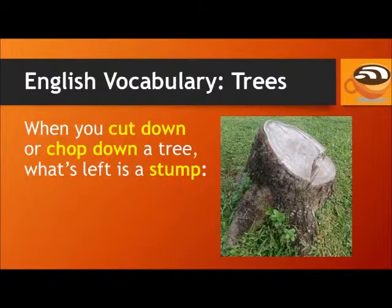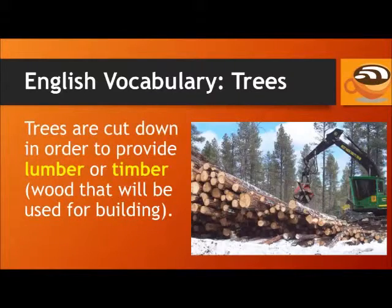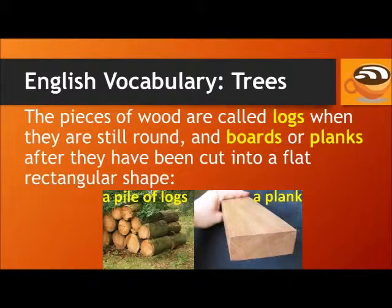When you cut down or chop down a tree, what's left is a stump. Trees are cut down in order to provide lumber or timber. Both of these words refer to wood that will be used for building. The pieces of wood are called logs when they are still round, and boards or planks after they have been cut into a flat, rectangular shape.